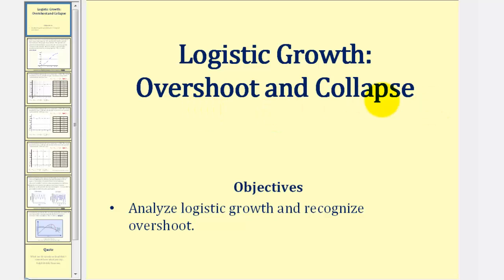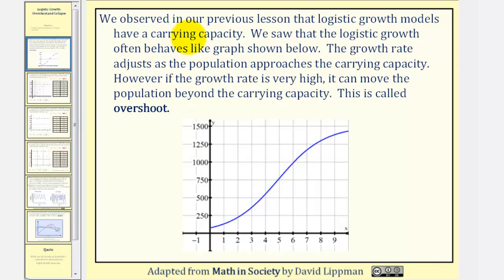Welcome to a lesson on overshoot and collapse involving logistic growth. We observed in the previous lesson that logistic growth models have a carrying capacity. We saw that logistic growth often behaves like the graph shown here below. Notice how it appears the carrying capacity would be 1,500.